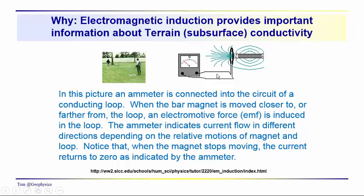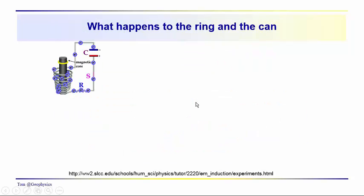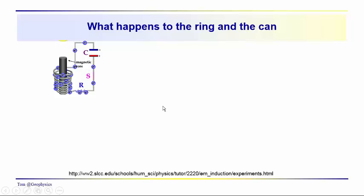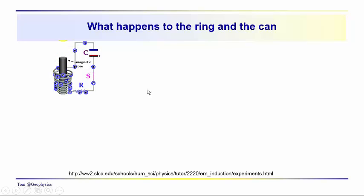That variable current flow in turn induces its own electromagnetic field, and that's the phenomenon we're taking advantage of when we run terrain conductivity electromagnetic induction surveys.